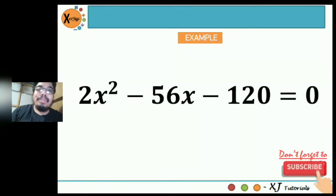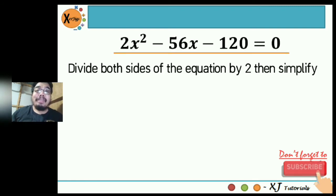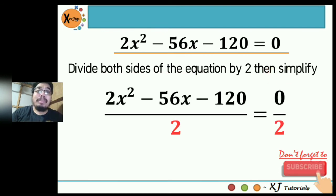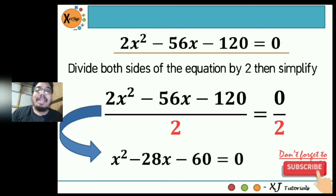Here's another example: 2x squared minus 56x minus 120 equals 0. We will solve this by completing the square. The first thing to do is divide both sides of the equation by 2, then simplify. We do this because our goal, prior to solving by completing the square, is to make sure the leading coefficient is 1. Since it is 2, we divide both sides by 2. That gives us x squared minus 28x minus 60 equals 0.